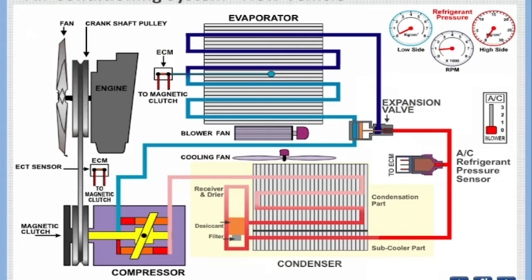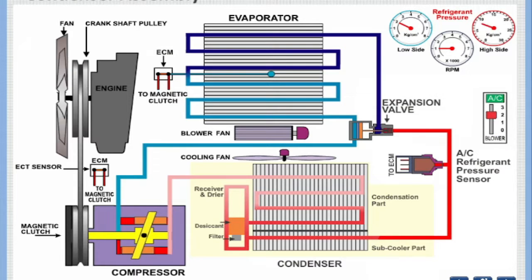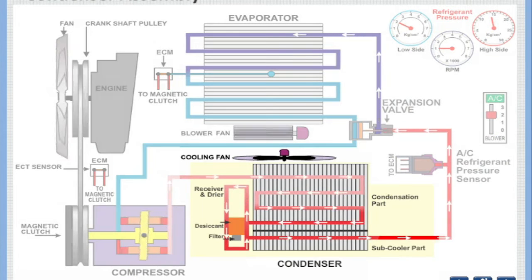Let us examine the difference of components and their working in air conditioning system of new vehicles. In new vehicles, the receiver and dryer is an integral part of condenser assembly.